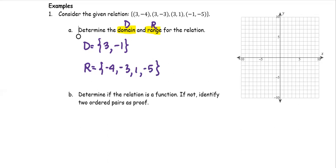In part B, we determine if the relation is a function. If not, we identify two ordered pairs as proof. The relation is a function if and only if the first coordinate maps to exactly one second coordinate. Looking at the mapping, the first coordinate 3 maps to negative 4, but also maps to negative 3 and 1. The negative 1 maps to negative 5.